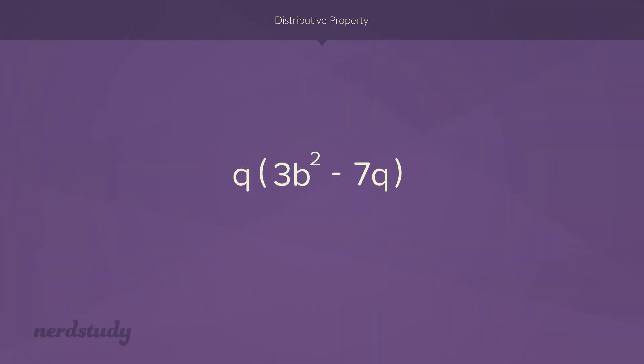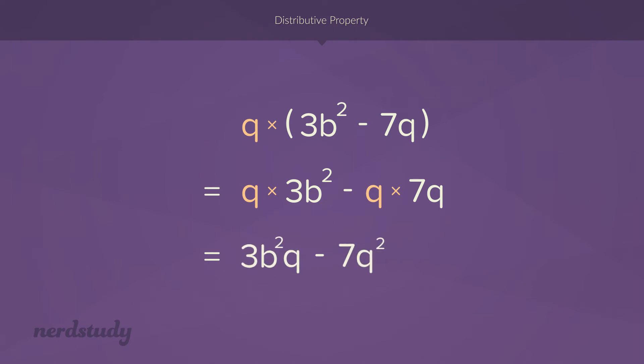So let's try a few examples so that we can get a little bit more comfortable with the distributive property. So in this example, we can use the distributive property as you can see, we're multiplying q with these two terms that are bracketed, and there's an operation. So we would have q multiplied by 3b squared minus q multiplied by 7q. And of course, all we have to do is simplify the following, and we would get our final answer. So notice here that this time we had a subtraction, as opposed to the addition that we had in our previous example, of course, it doesn't matter if there's an addition or subtraction, so long as you take that into consideration.